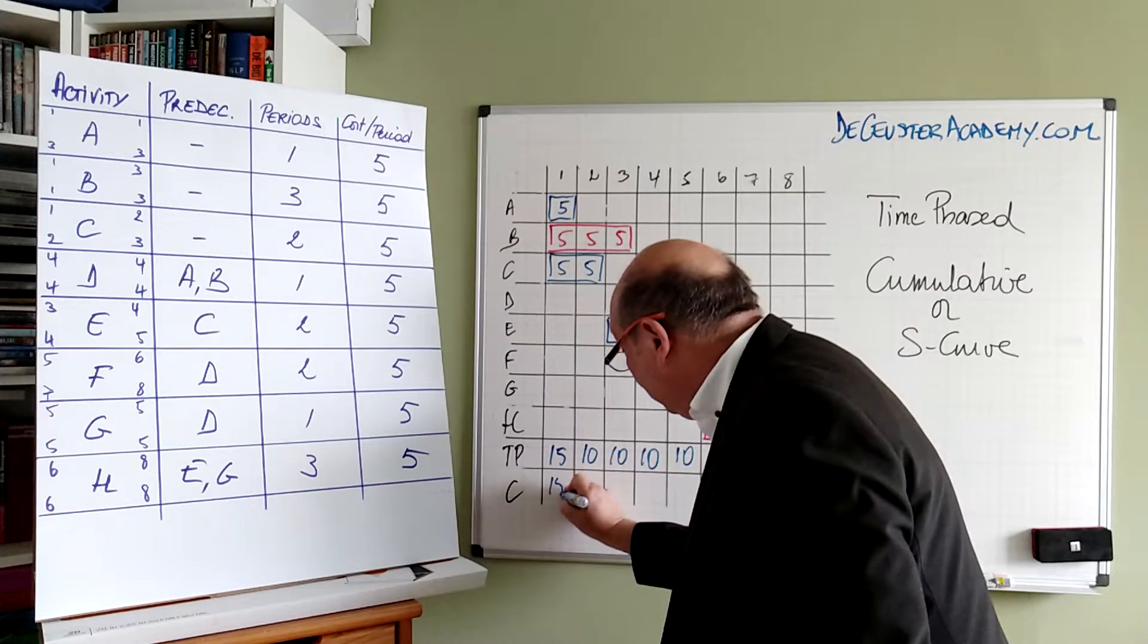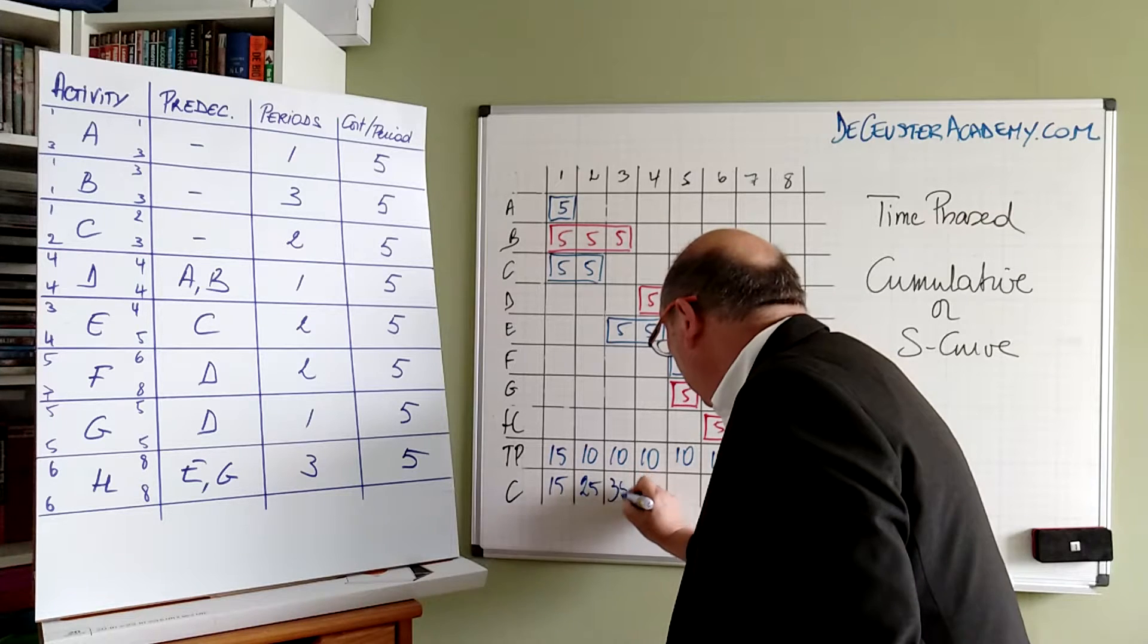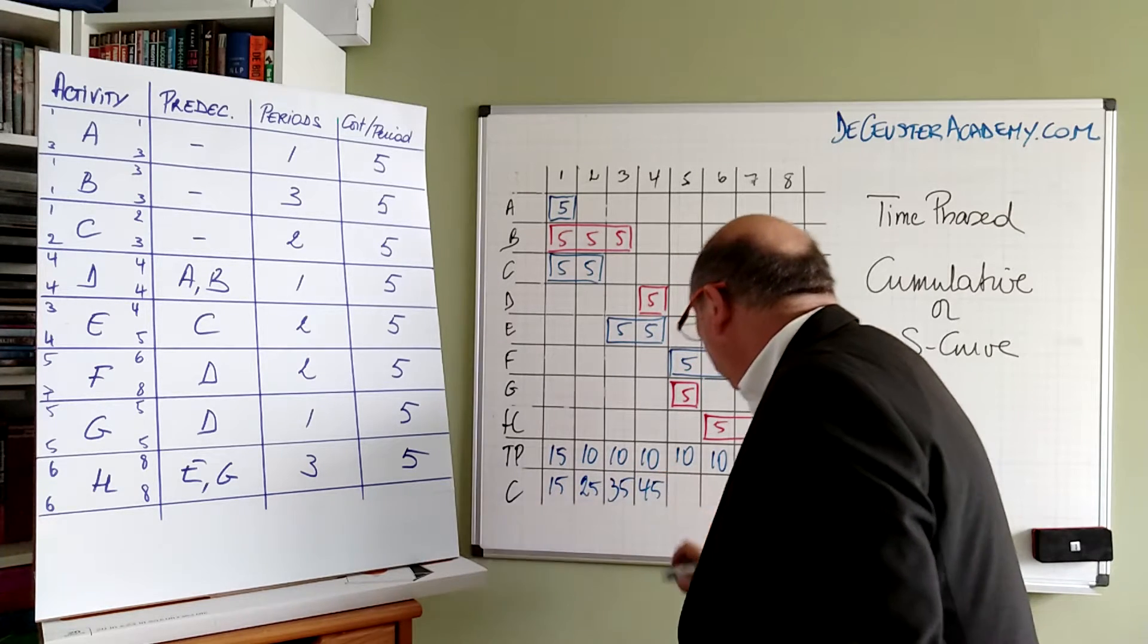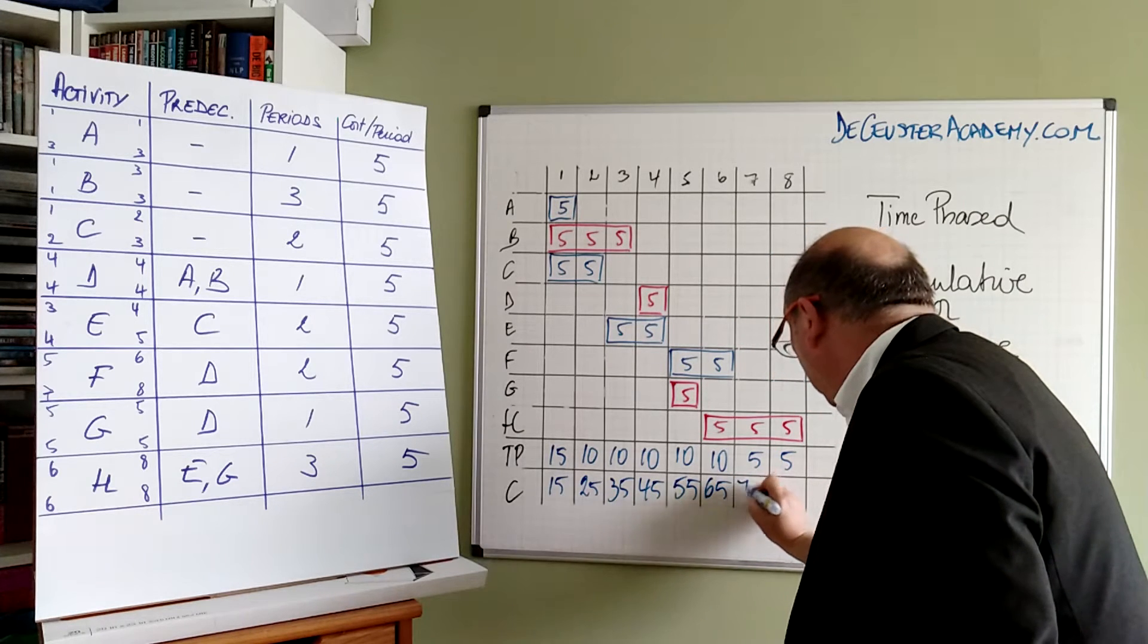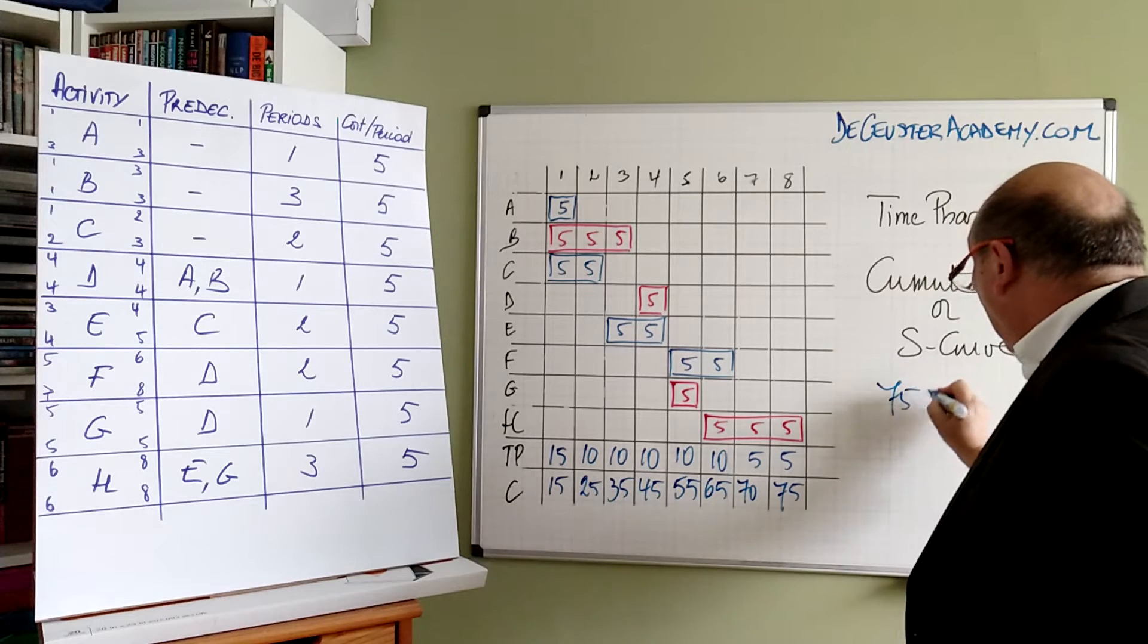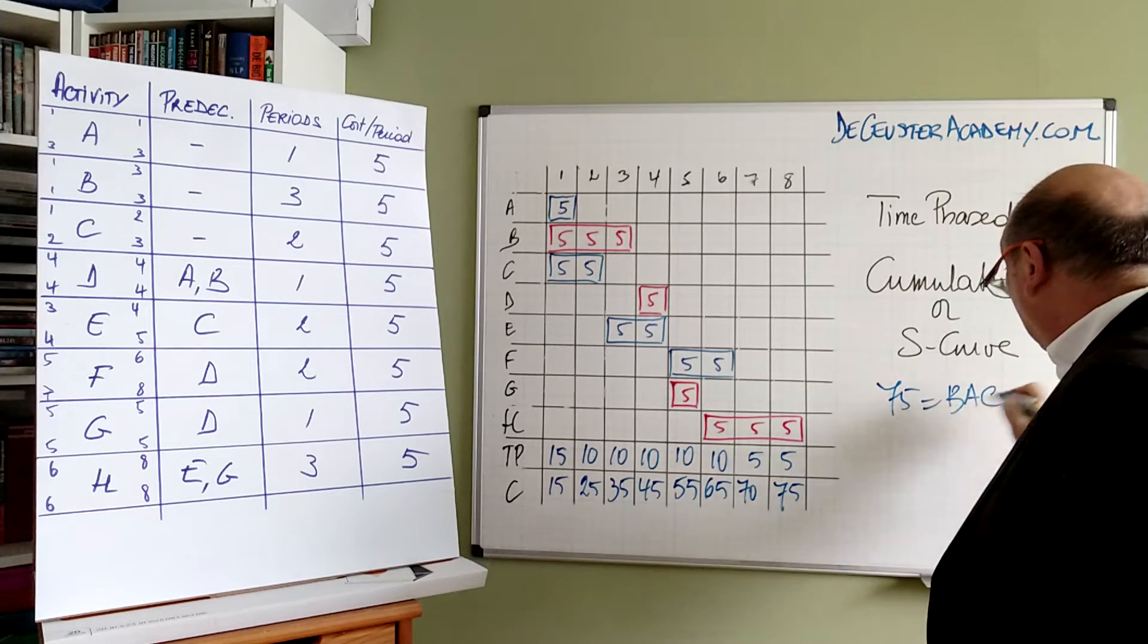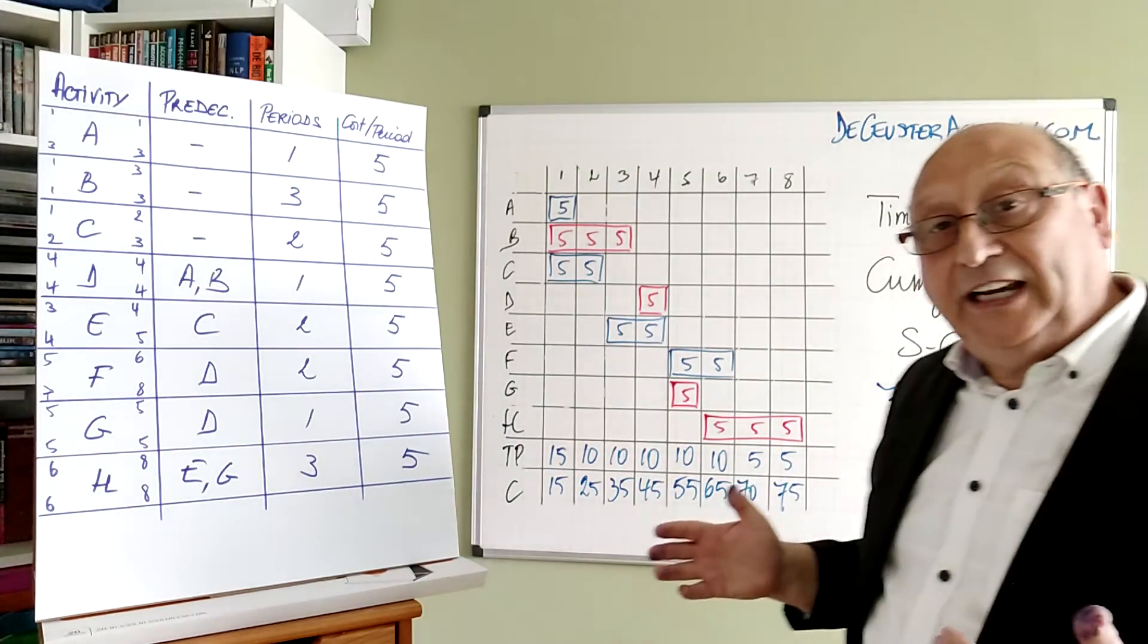So we have 15, 25, 35, 45, 55, 65, 70, and 75. And 75 is what we call the budget at completion. Now we can do the same thing for our project when we are in late start position.